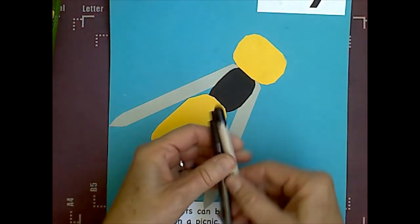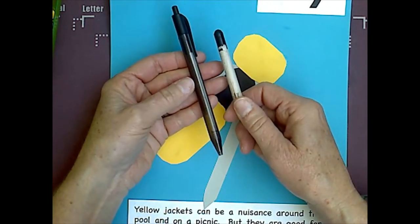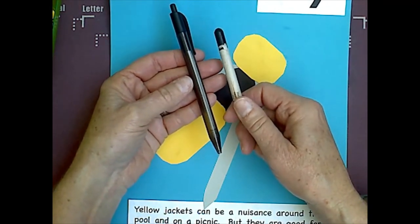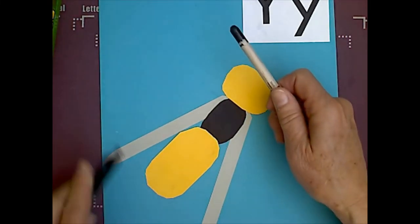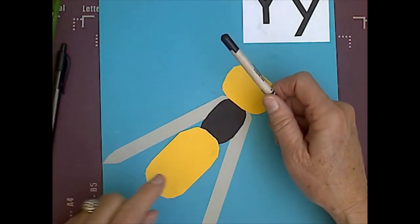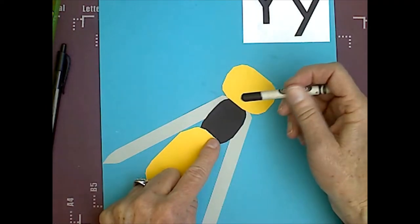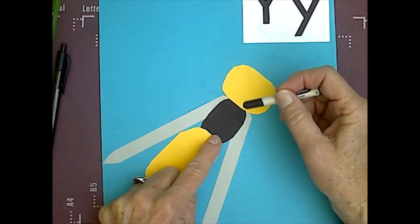We are done with the cutting part. Now, we are on the pen and the crayon. Okay, so, let's start with our crayon. And, we are going to start with the legs.